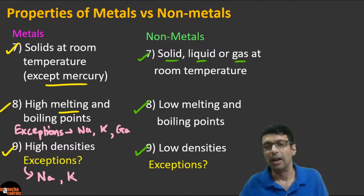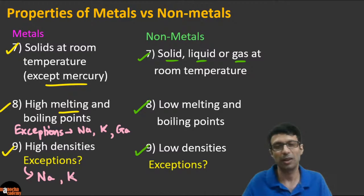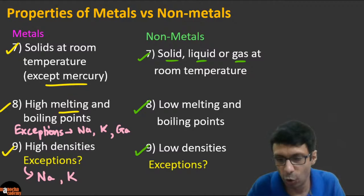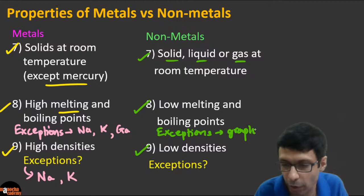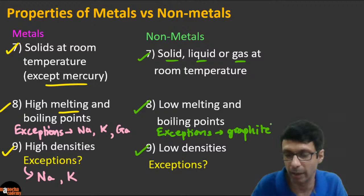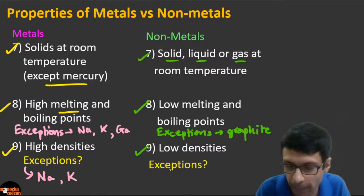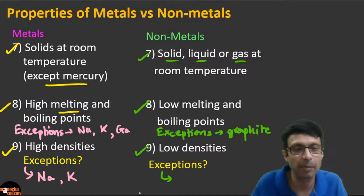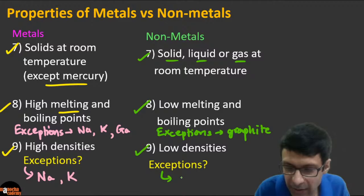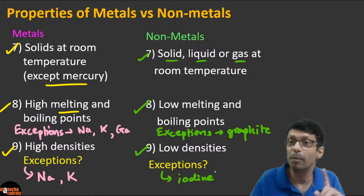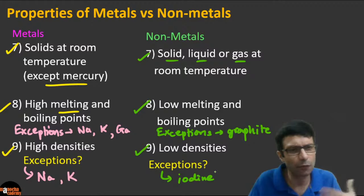Non-metals usually have low melting and boiling points. Exception: graphite has a high melting and boiling point. Non-metals usually have low density. Exception: iodine has a high density. Iodine is the same non-metal that had a metallic shine — it has both a metallic shine and a high density.